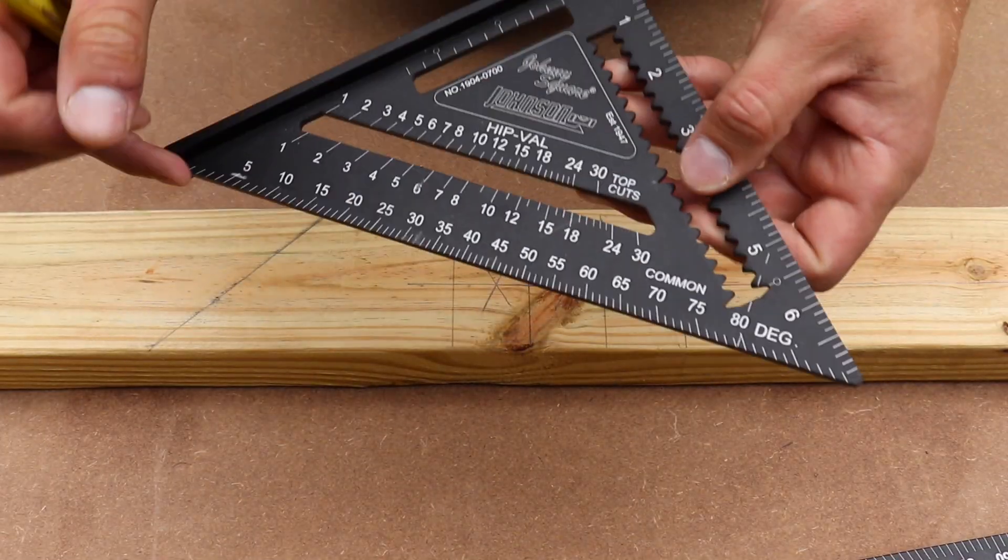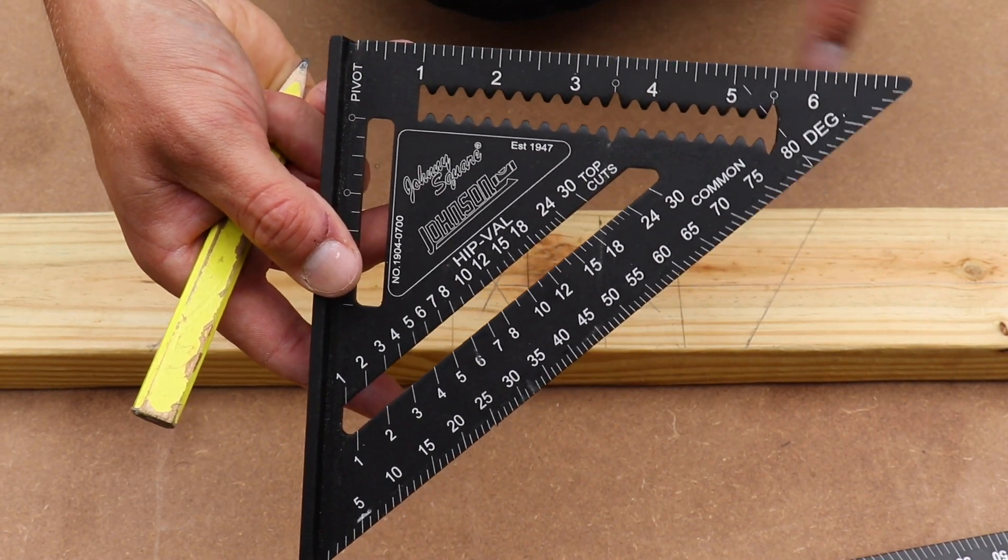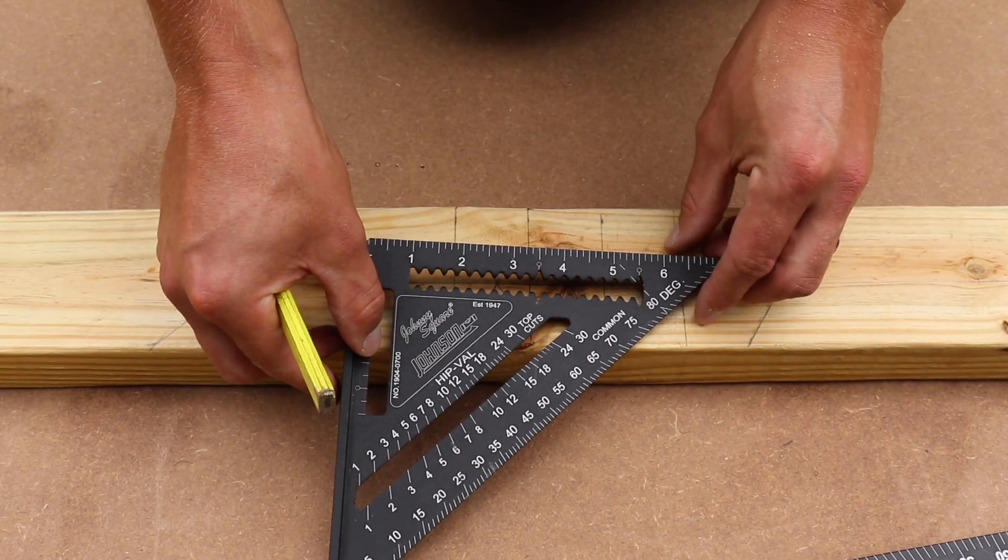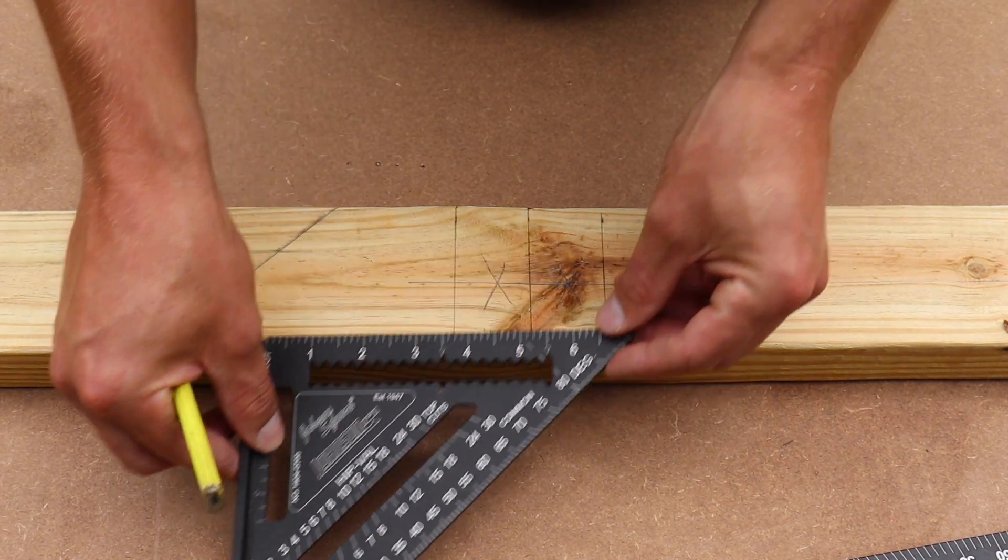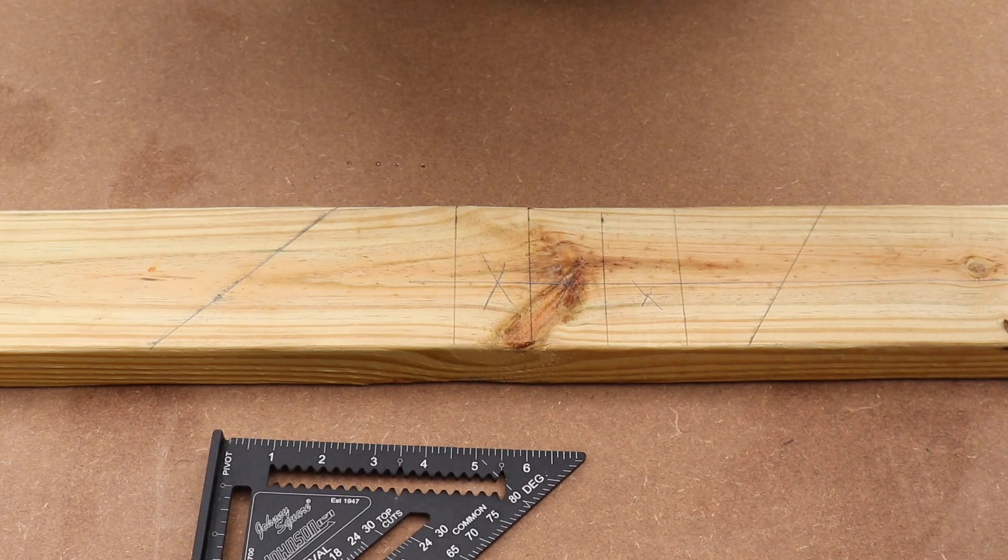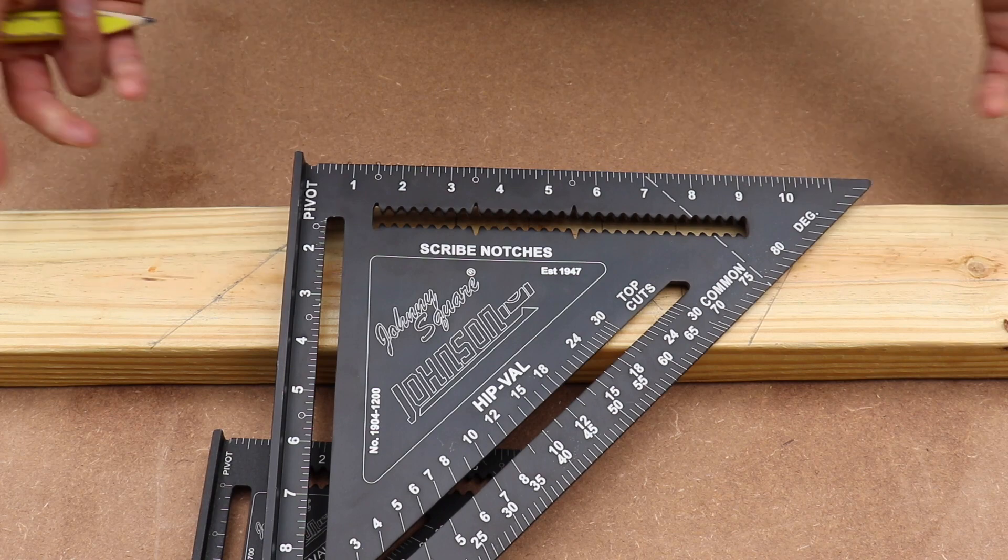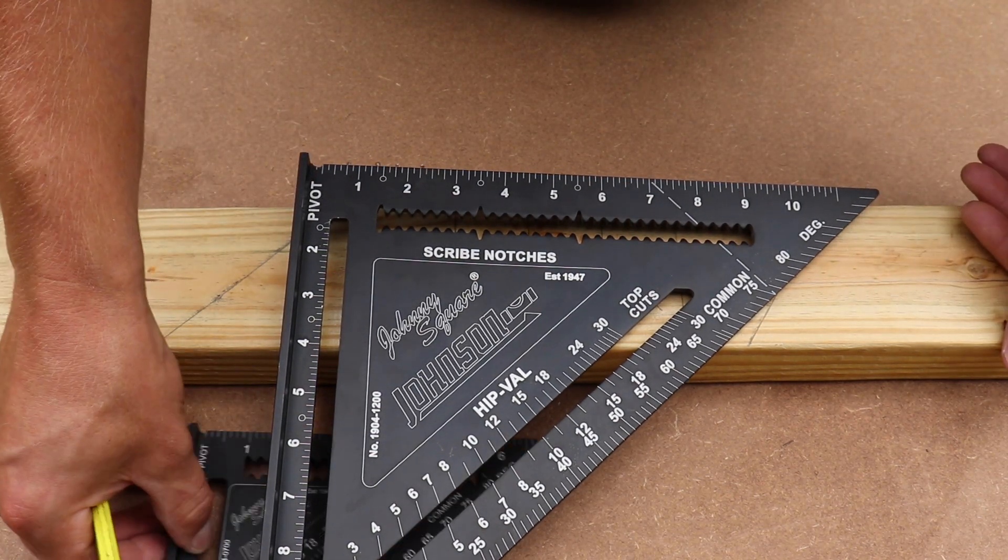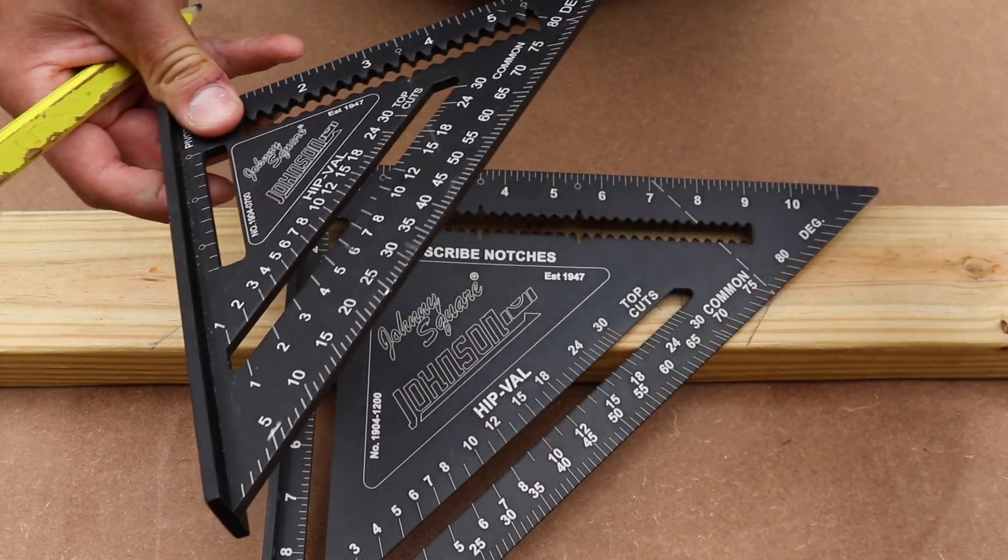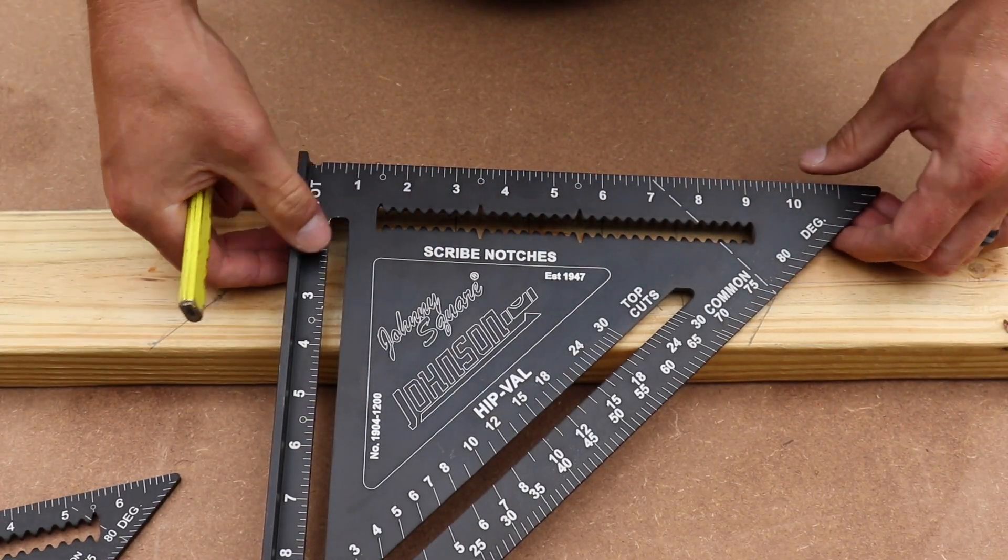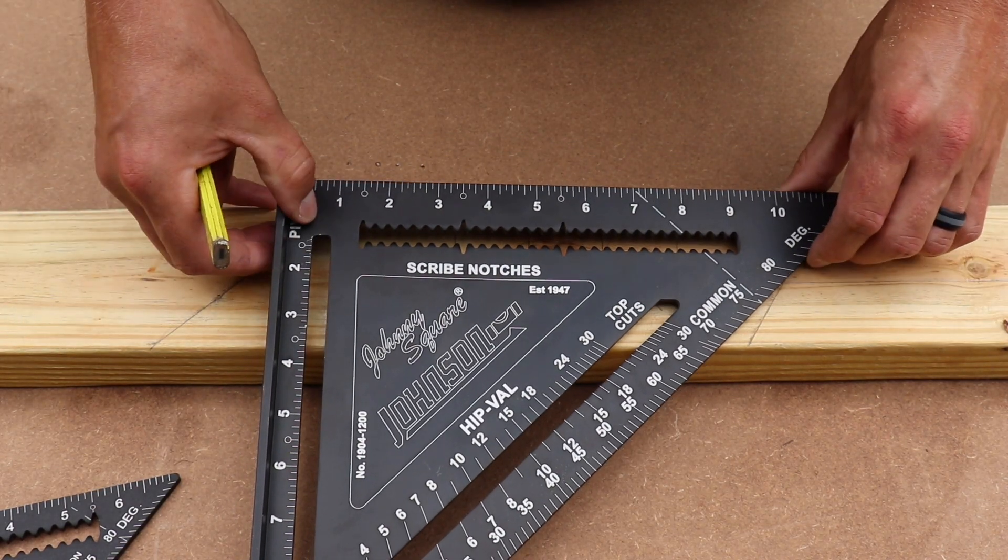Also the top side of your speed square has a ruler on it as well. And this is a seven inch speed square. So that's going to be about seven inches from end to end. We also have a 12 inch speed square. For the most part, you're going to use a seven inch. That's typically what I'm using. I don't often need a 12 inch speed square, but it's good to have on hand just in case you do.